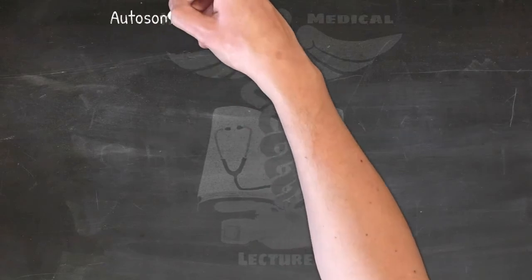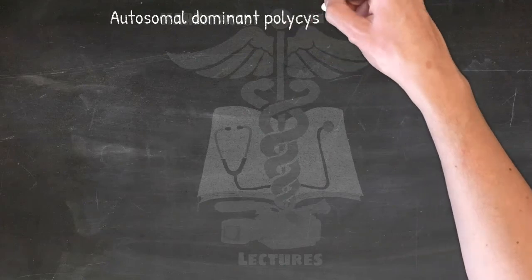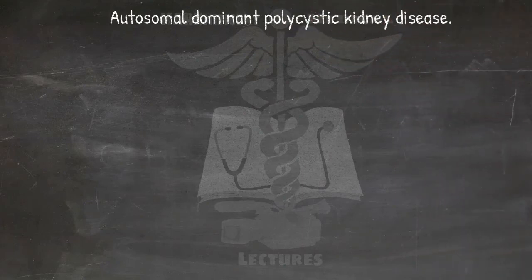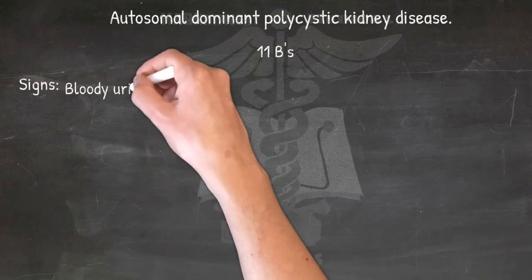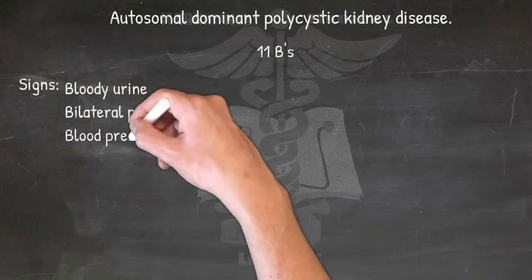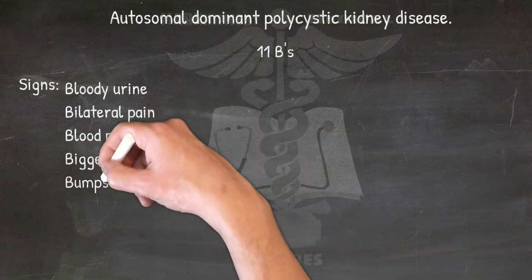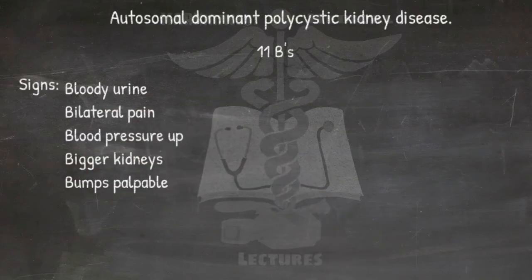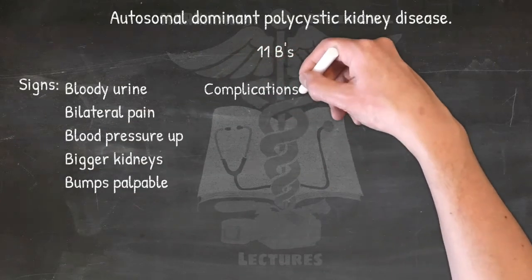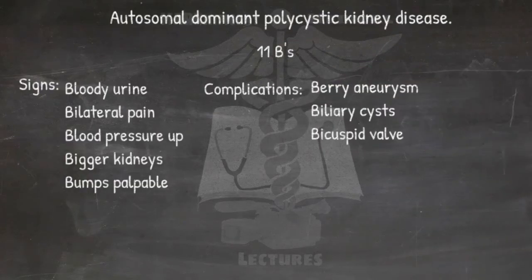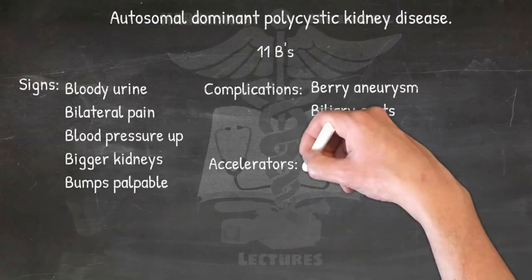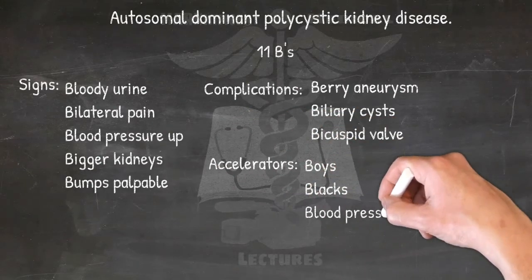Signs, complications, and accelerators of autosomal dominant polycystic kidney disease: signs — Blood pressure up, Bigger kidneys, Bumps palpable. Complications — Berry aneurysm, Biliary cysts, Bicuspid valve prolapse, and other problems. Accelerators — Bicuspid valve prolapse and Blood pressure high.